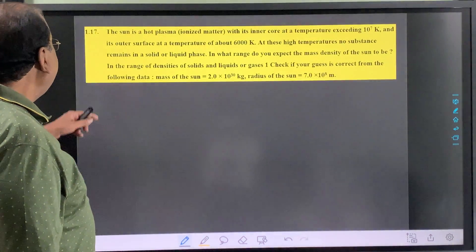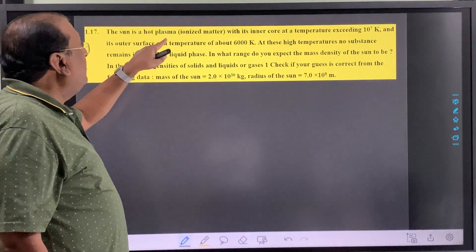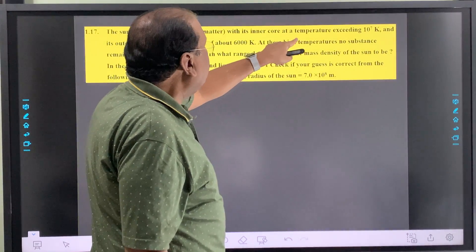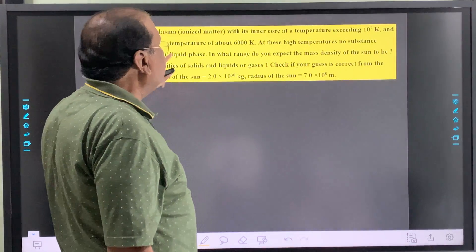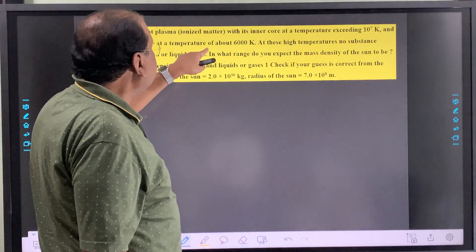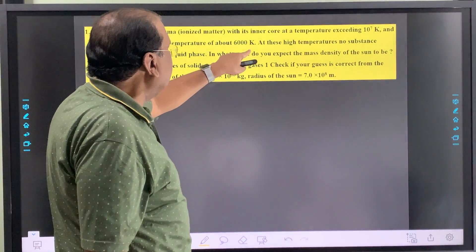Now next 1.17. The sun is a hot plasma ionized matter with its inner core at a temperature exceeding 10^7 Kelvin and its outer surface at a temperature of about 6000 Kelvin.